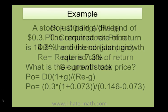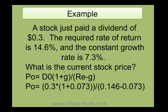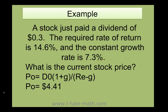Well, let's go ahead and do it in our problem. Here I have P sub 0 equals D sub 0, which in this case is 0.3, times 1 plus G. Now my G right here is 7.3, but I divide it by 100, and that's how I get this number. And that's all divided by the required rate of return, which is 14.6%, minus the growth, and I do my math, and that's it.